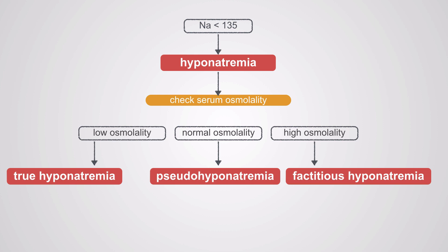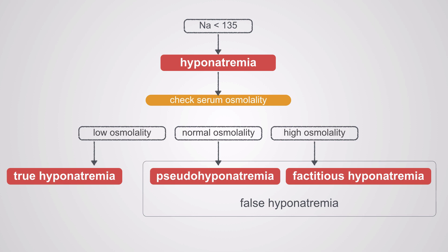In factitious hyponatremia, the sodium is truly low but it doesn't have the same implications as true hyponatremia. Water is actually moving out of the cells rather than into them, and this will be due to elevated glucose, maybe mannitol, or a glycine infusion during a urologic procedure. Both pseudo-hyponatremia and factitious hyponatremia make up false hyponatremia — these patients don't have water movement into cells nor the typical symptoms of hyponatremia.